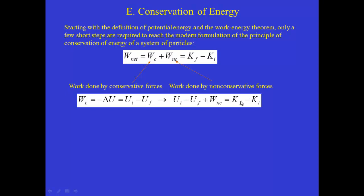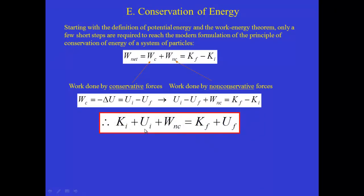Plugging in, W_NC plus U_initial minus U_final equals the change in kinetic energy. Adding K_initial to both sides and U_final to both sides, we get the master equation: K_initial plus U_initial plus W_NC equals K_final plus U_final. This is the equation you will use over and over again in Chapter 7 and later chapters. It expresses an energy balance: all initial energy — kinetic plus potential — accounting for energy changes due to non-conservative forces, equals the final kinetic plus potential energy.